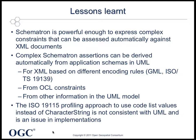We found that Schematron is powerful enough to express complex constraints. It has been possible to specify encoding rules so that complex assertions could also be derived automatically from application schemas in UML, both for GML features and ISO 11139 metadata instances. However, the ISO 11115 profiling approach to allow codelist values for properties where the data type is character string is not consistent with UML, and thus is an issue in implementation as this breaks OCL parsers.